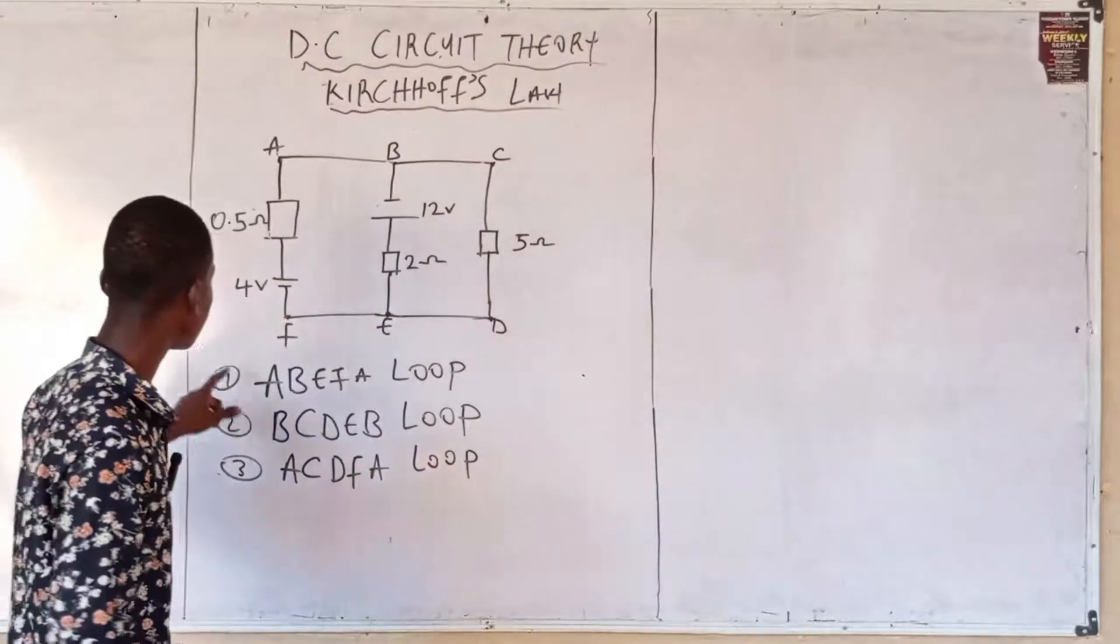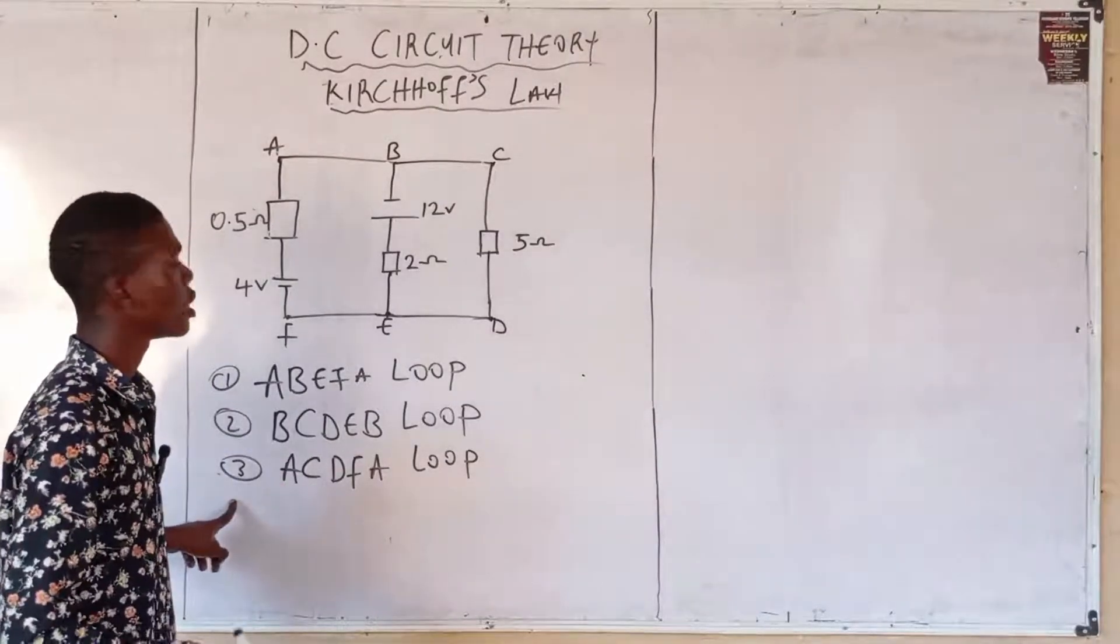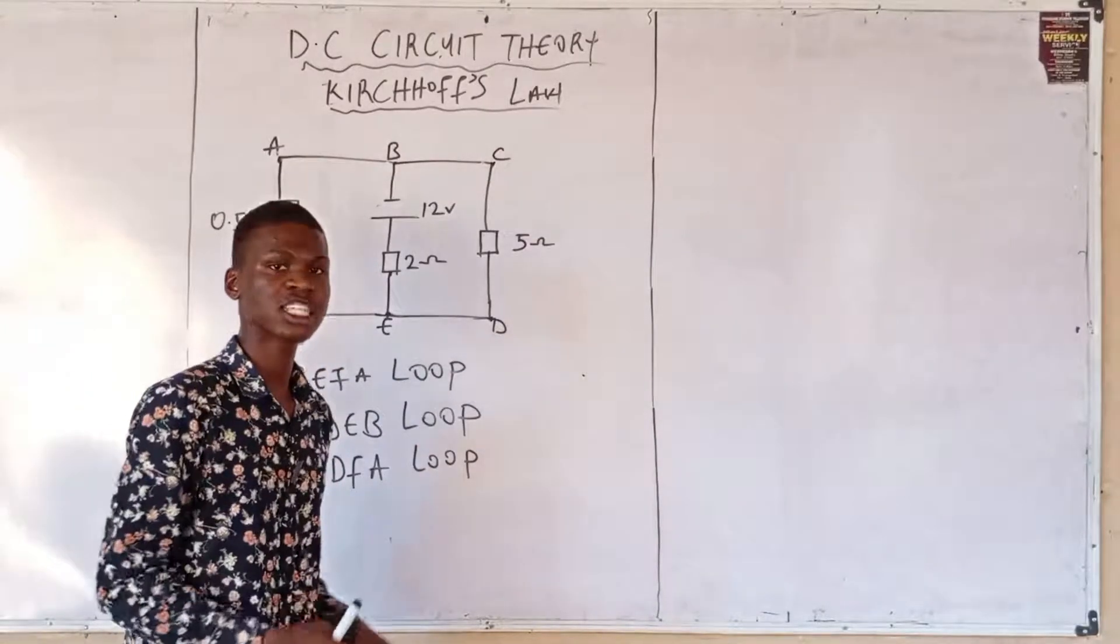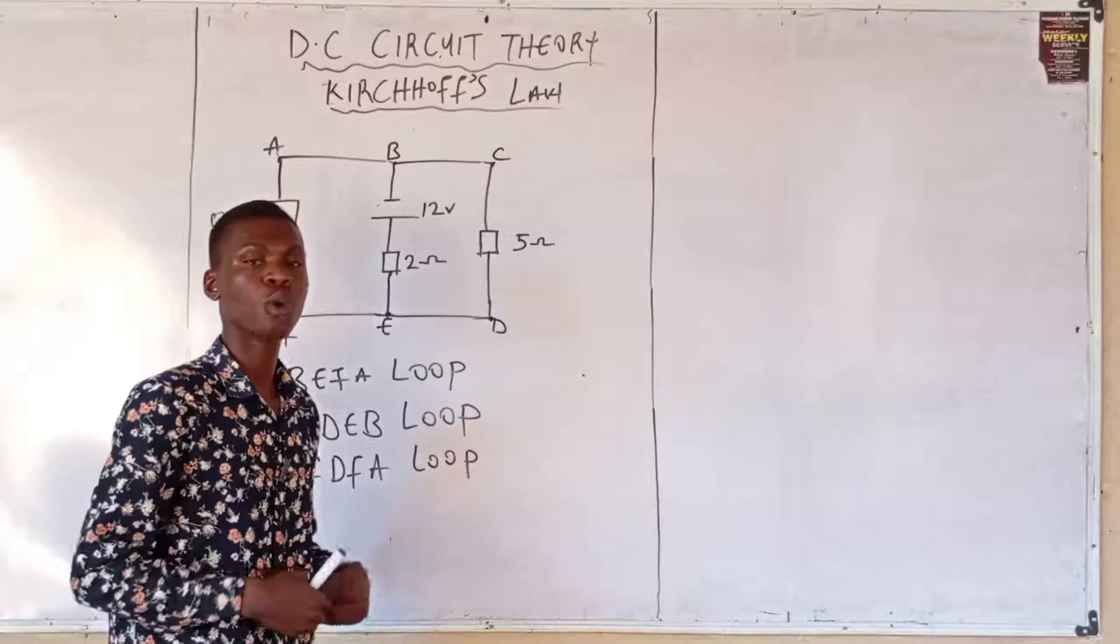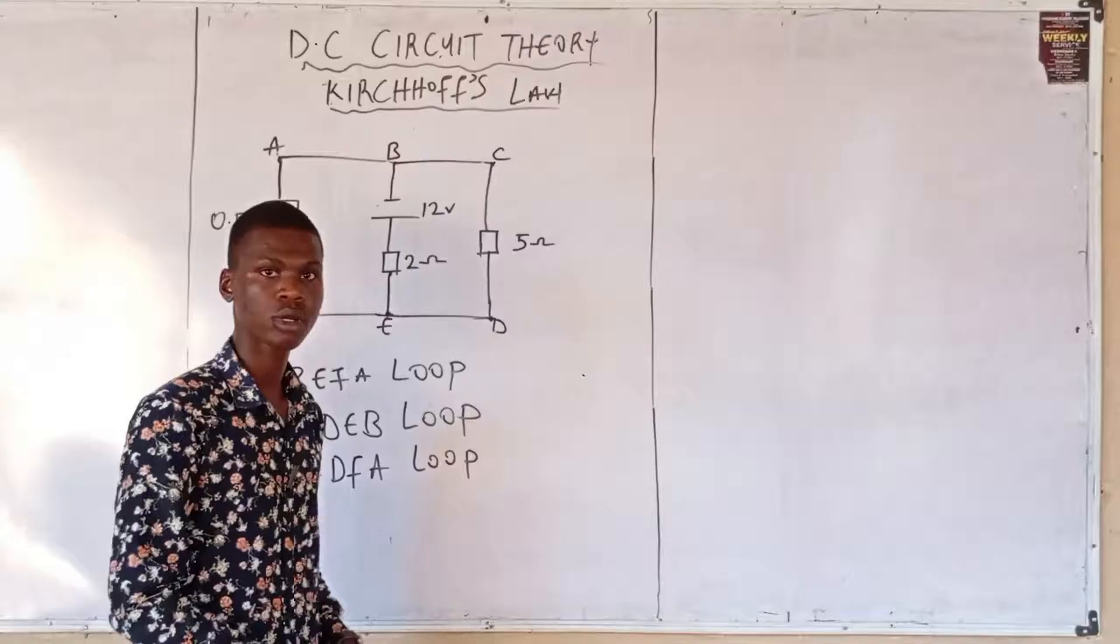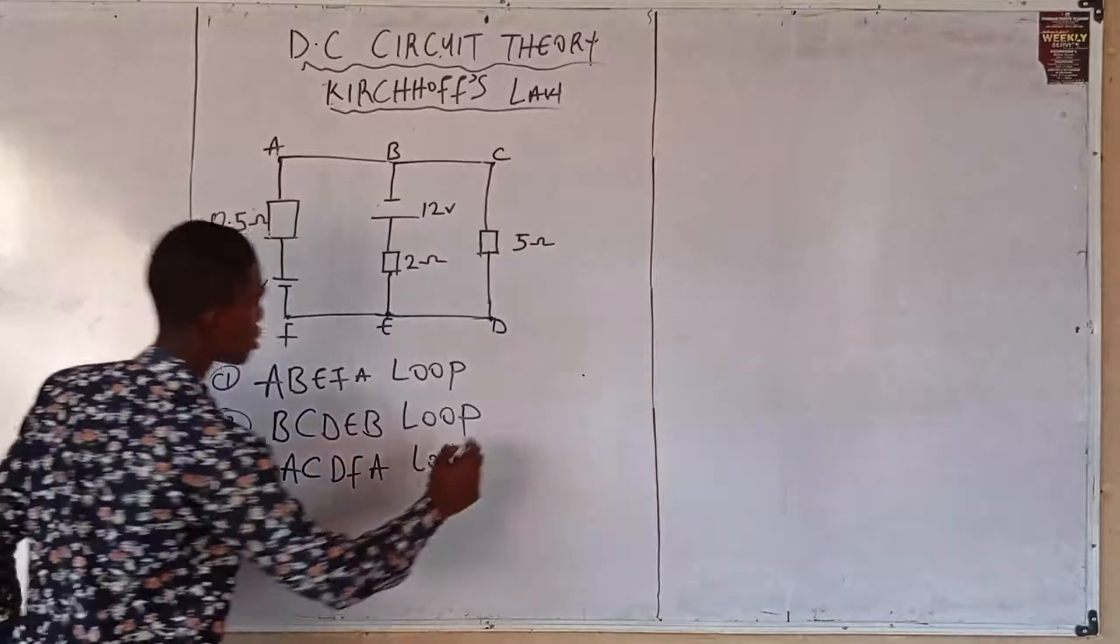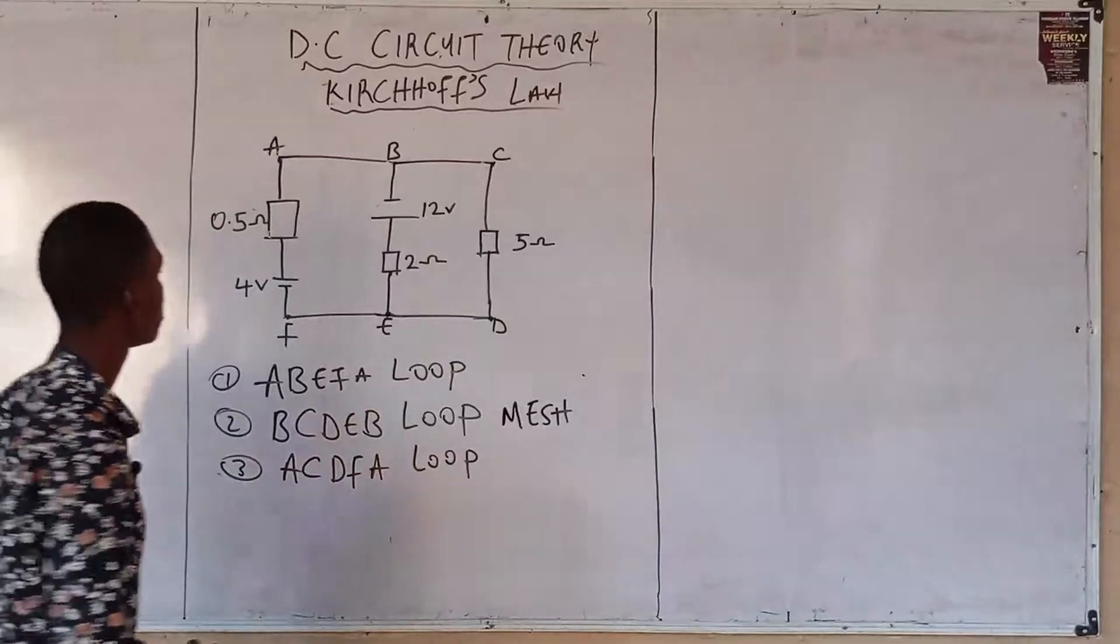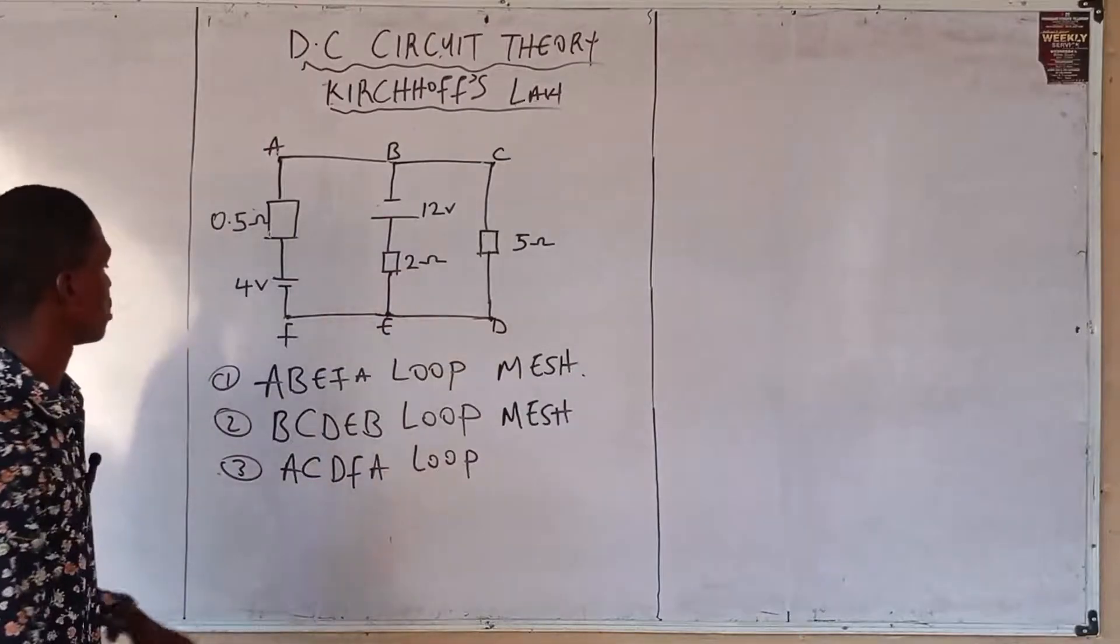Then how do you identify your mesh? If one is a loop, two is a loop, three is a loop, which are mesh? Here's how it works. We said a mesh is found inside a loop. A mesh can be a loop, but it is a type of loop found inside a loop. Loop number two is a mesh. Mesh number one is also a mesh, while number three remains a loop.